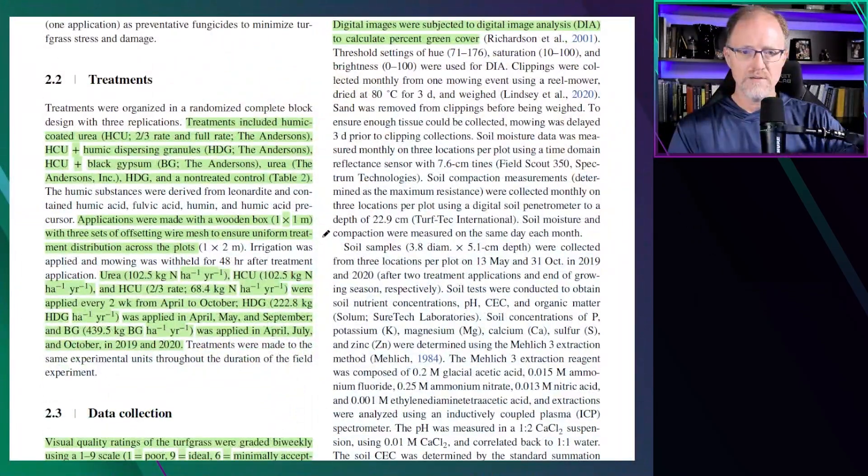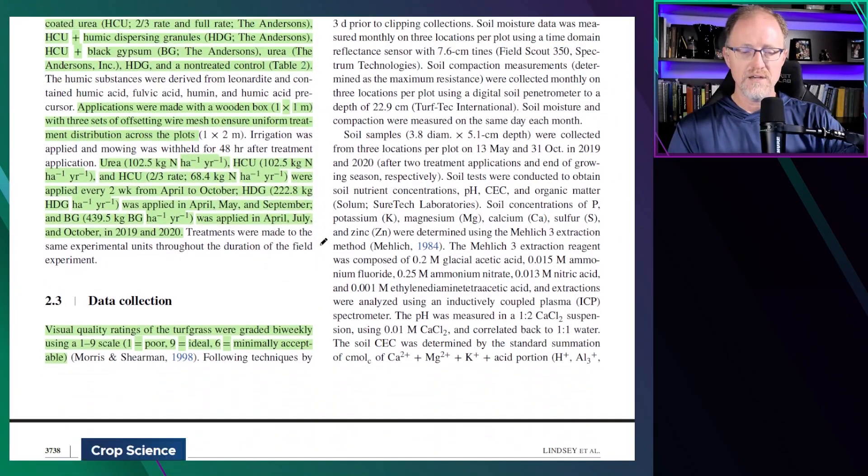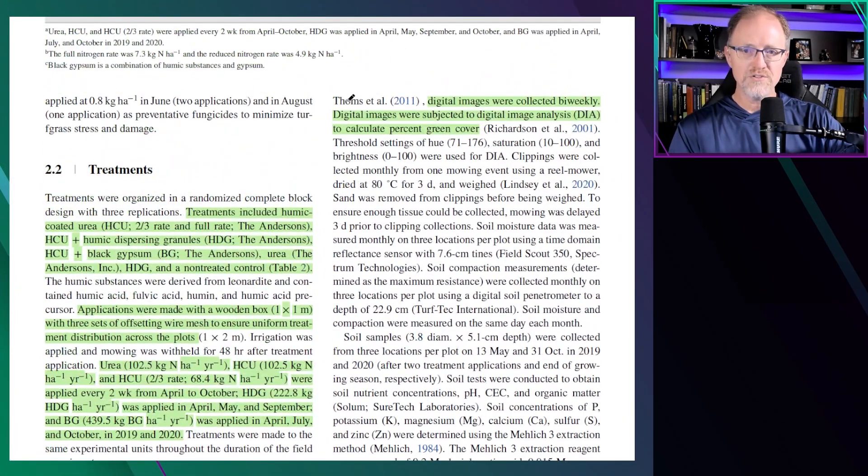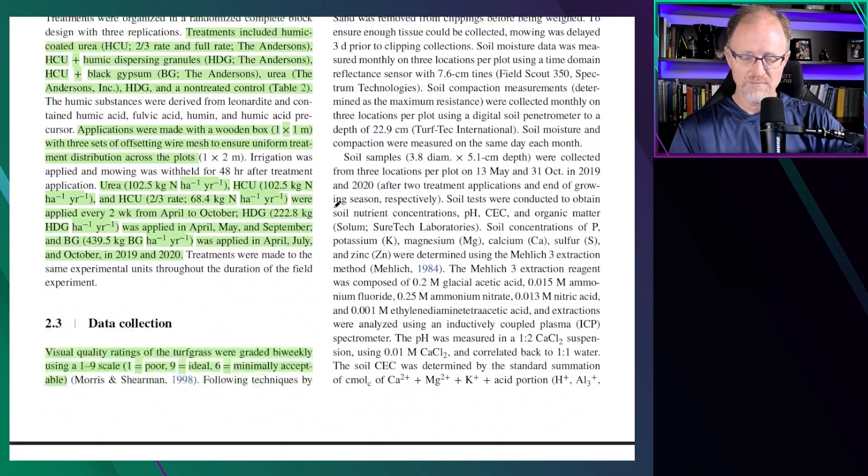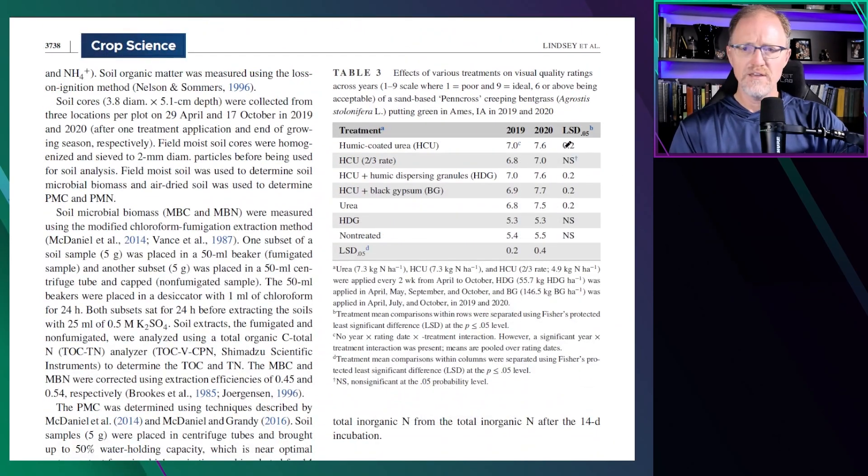They measured turfgrass quality and digital image analysis to measure the percent greening. You'll see here in table three that the differences in 2019 between urea were none. There was nothing that resulted in greater quality than straight urea in 2019. All of them were very acceptable except the straight humic-dispersable granule and the non-treated turf. They were inferior and not acceptable to all of the treatments.